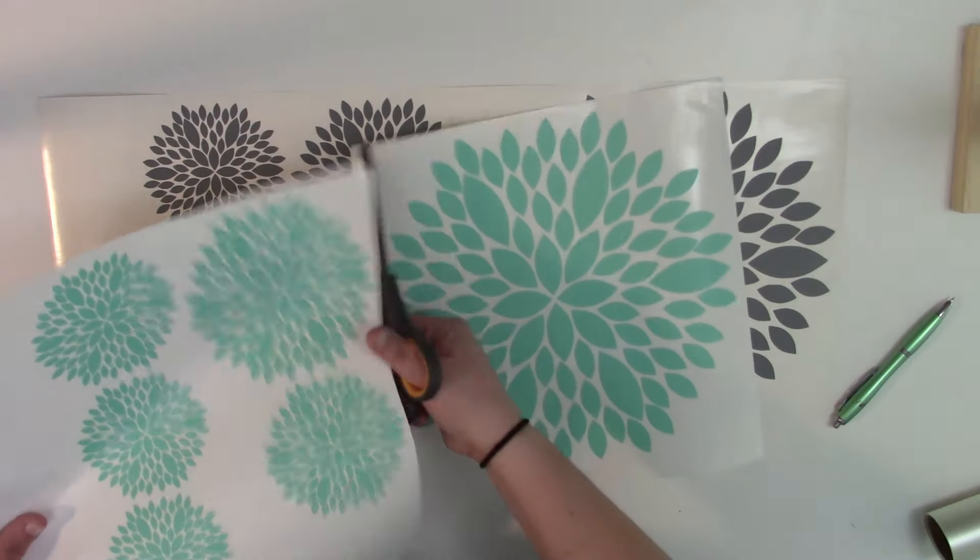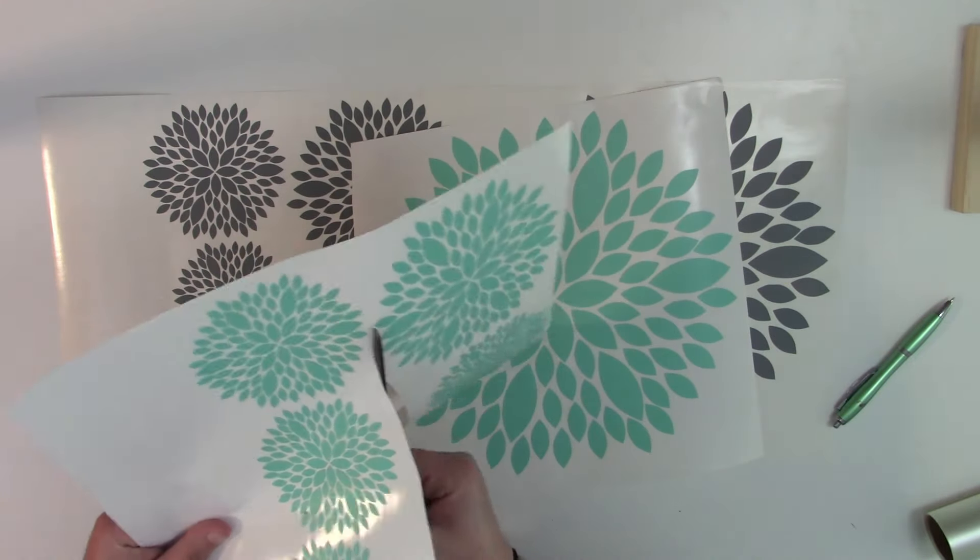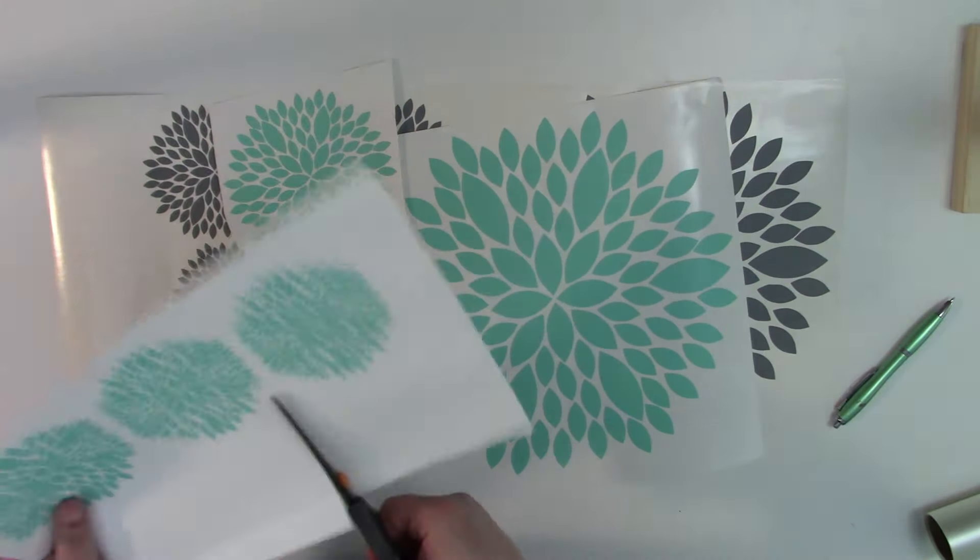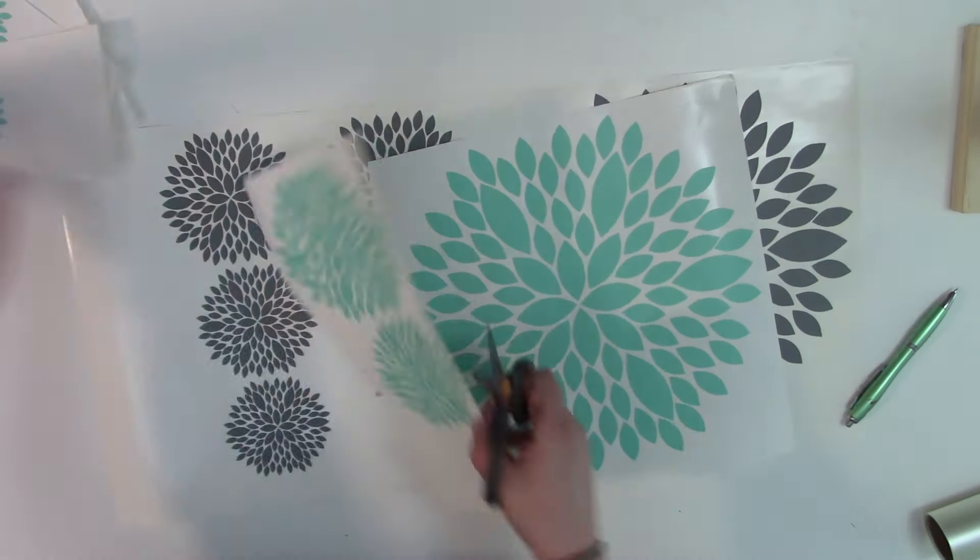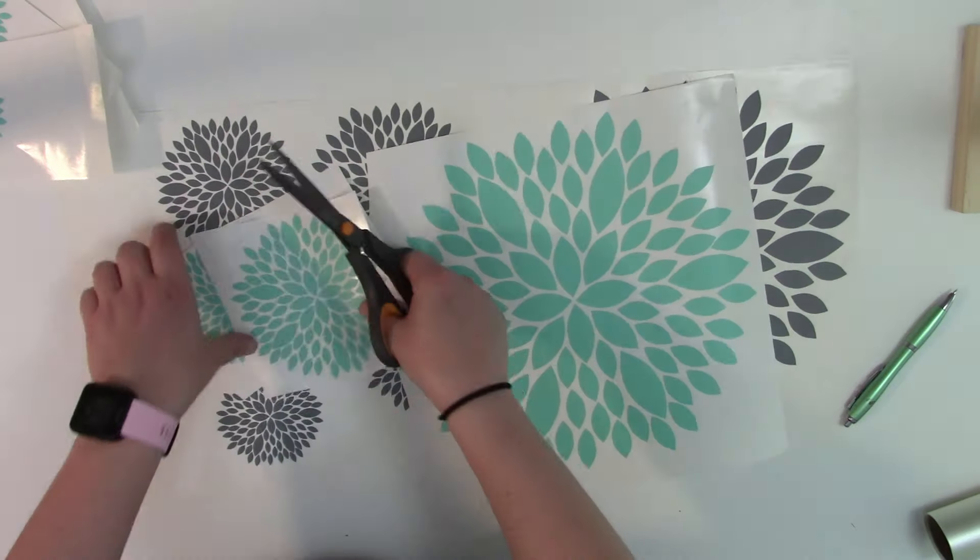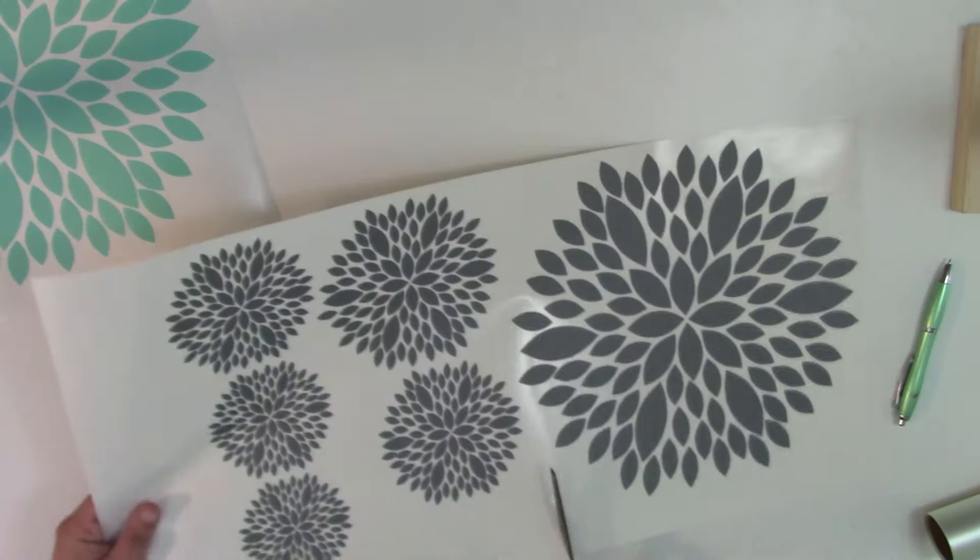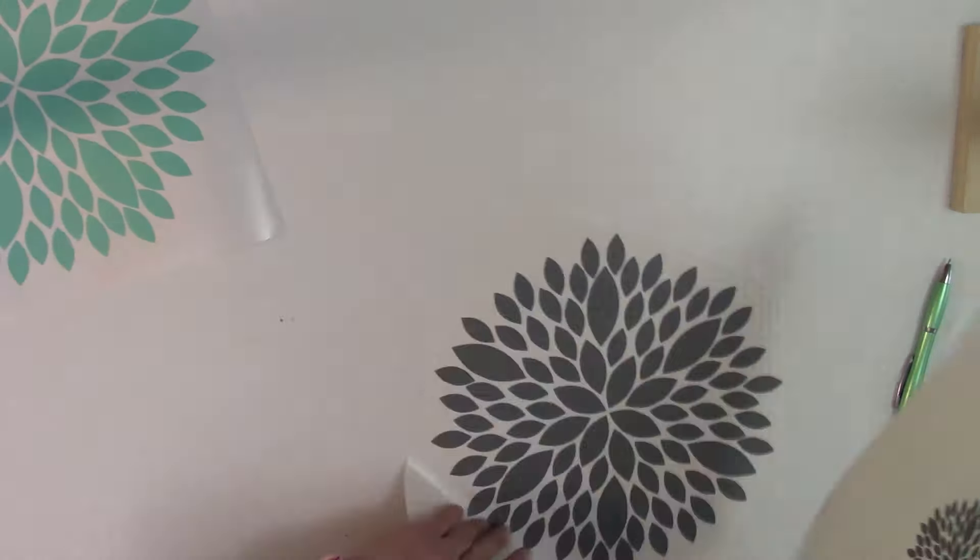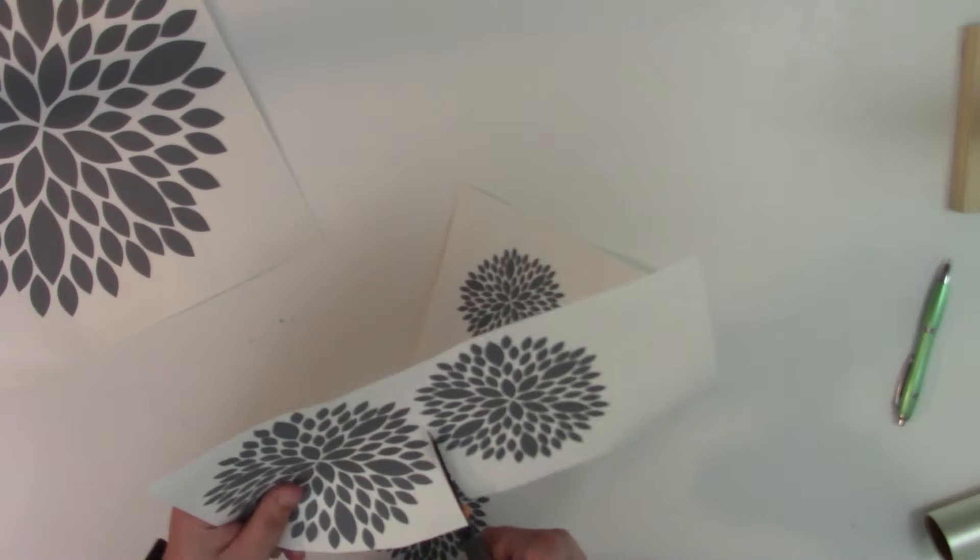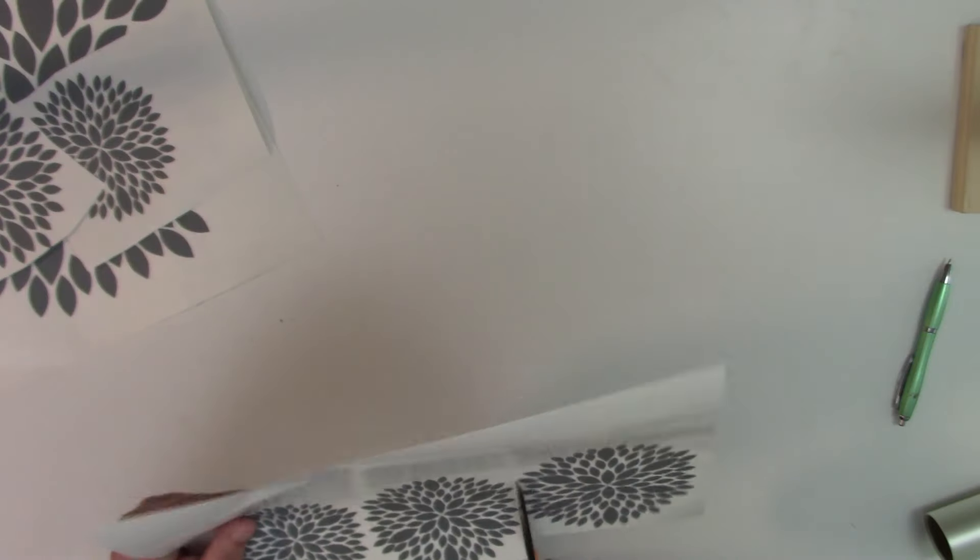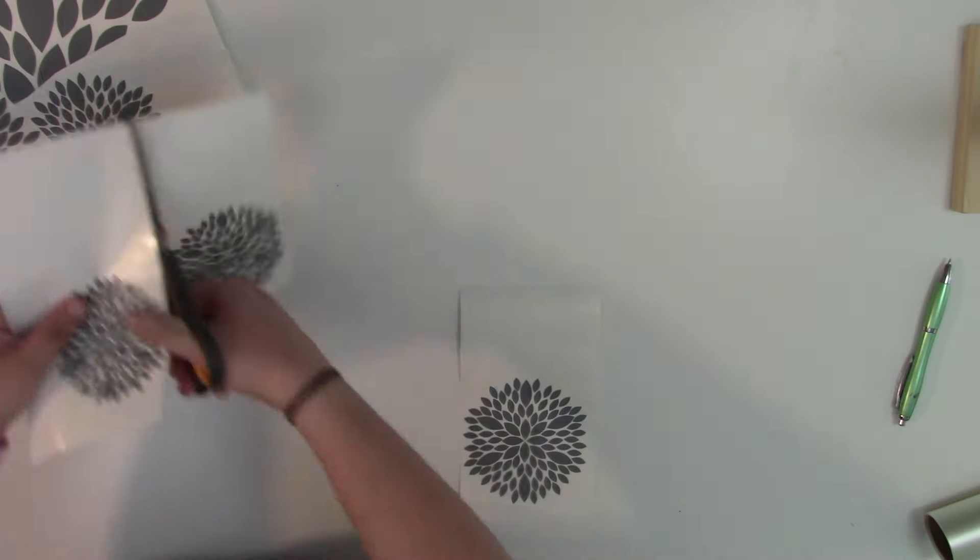The next step is to cut apart your decals. You can lay them on your transfer tape uncut if you prefer, but for me, I like to lay them already cut out. For me it just makes less bubbles, especially when working with a long 24 inch piece. But this is all up to you and whatever works best for you.